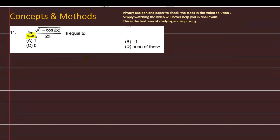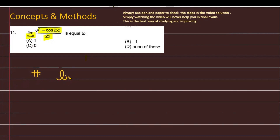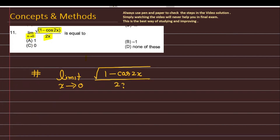The question is: limit x approaching to 0, square root of 1 minus cos 2x, divided by 2x. So let's see how we are going to solve the given problem. Let's start — I will note the question data. So you can see the question here: limit x approaching to 0, square root of 1 minus cos of 2x, divided by 2 times of x.